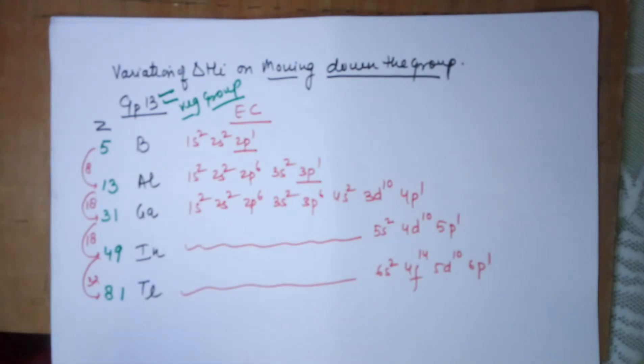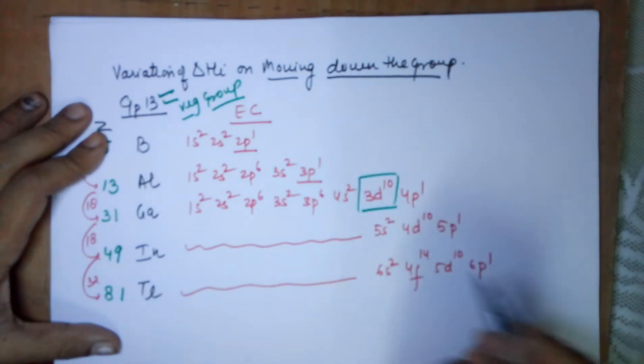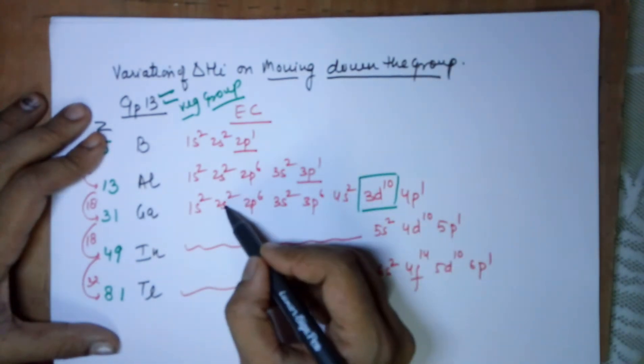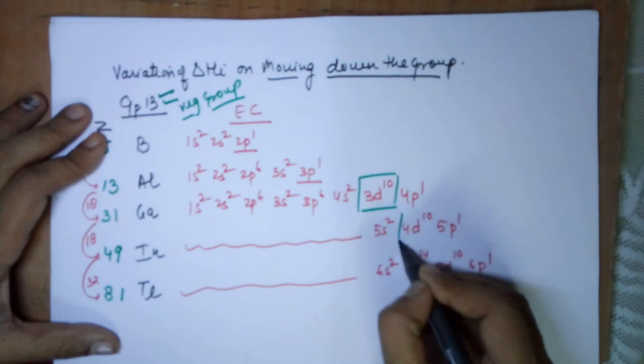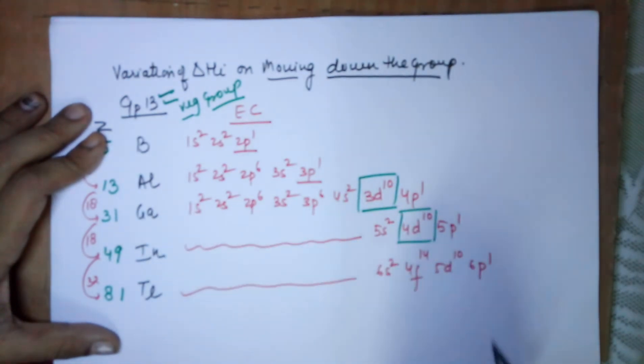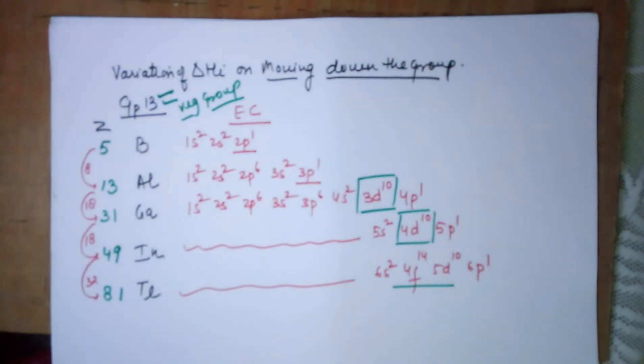This is how you have the electronic configuration of the elements. Whenever you move down you have an incorporation of 3d when you move from aluminum to gallium, you have 4d¹⁰ on moving from gallium to indium, and you have an f as well as a d when you move towards thallium.